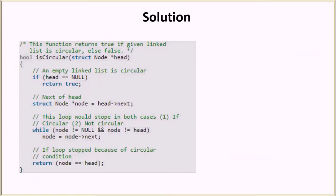Here is the isCircular function. First we check if head is equal to null. If that is the case, the linked list doesn't contain any node, and as we discussed, if the linked list has no nodes we consider it circular, so we return true.